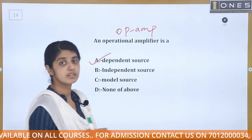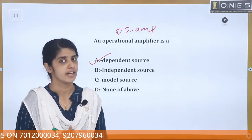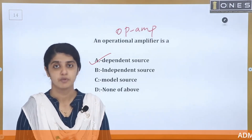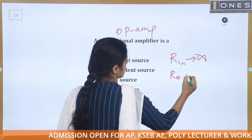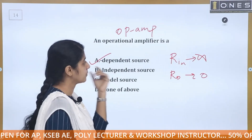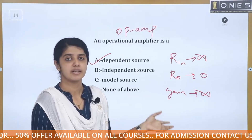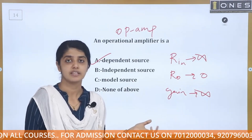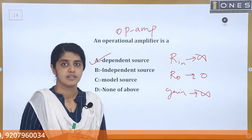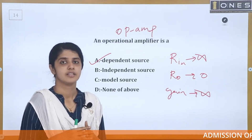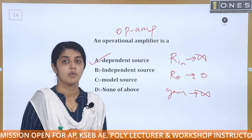The ideal characteristics of the operational amplifier are: input resistance is infinite, output resistance is zero, gain is infinite. The slew rate is dV/dt — change in voltage with respect to time, measured in microvolts per second. The CMRR is the common mode rejection ratio.